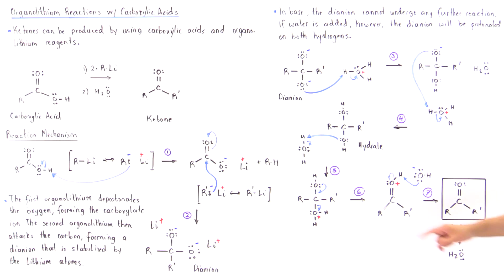In step six, the good leaving group is displaced. We form water as well as a double bond between the oxygen and the carbon.